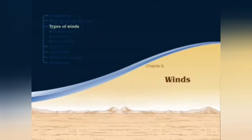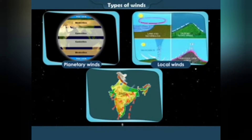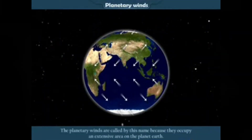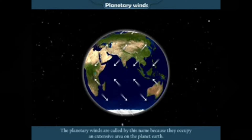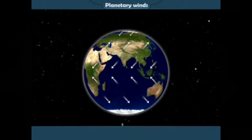Types of winds. There are three main types of winds: a) Planetary winds, b) Local winds, and c) Seasonal winds. Planetary winds are called by this name because they occupy an extensive area on the planet Earth. These winds blow all around the year. Planetary winds in different regions of the world are called the Easterlies, the Westerlies, and the Polar winds.